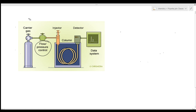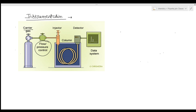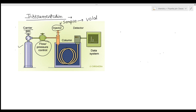Looking at the basic instrumentation of gas chromatography: there is a cylinder of carrier gas (the mobile phase), a flow or pressure control unit, and an injector where the sample is introduced. The sample introduced must be volatile, and a sufficient amount is injected into the mobile phase from this injector.